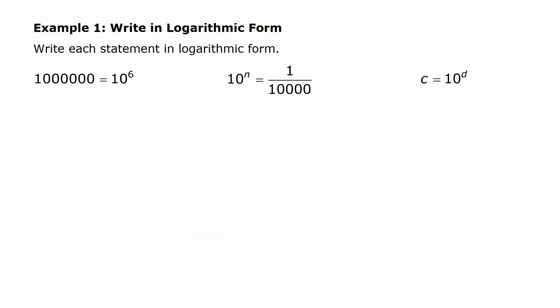In this first example we have things in exponential form and we're going to put them in logarithmic form. This first one says a million is ten to the sixth. You may be able to write that in logarithmic form just by knowing the relationship, but what we're looking at is how to apply the inverse concept. We have a million on one side and ten to the sixth on the other.